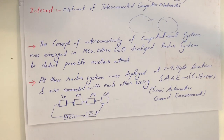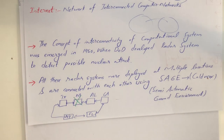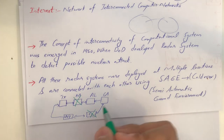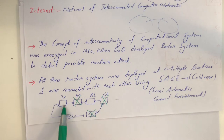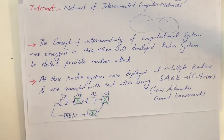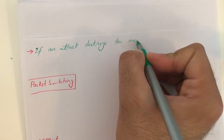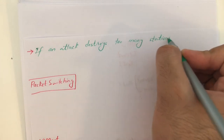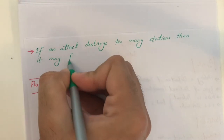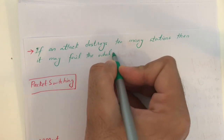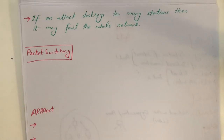For example, if an attack destroyed multiple radar locations — say this radar, this one, and this one — then Texas detecting something could communicate to New York, but could not communicate to Alabama. That was the problem. If an attack destroys too many stations or too many radars, then it may fail the whole network. That was basically the ultimate challenge.